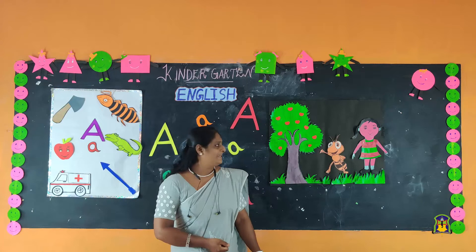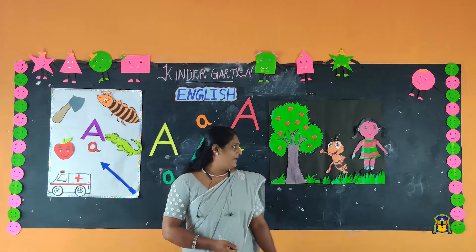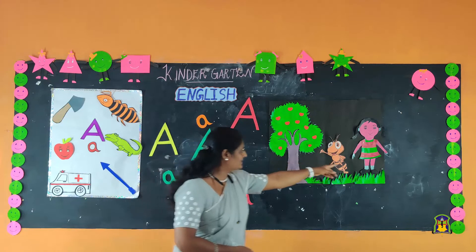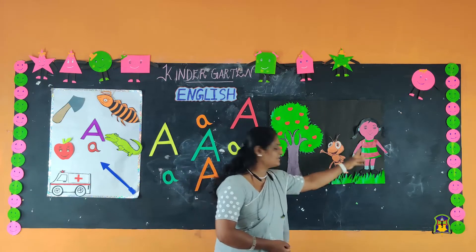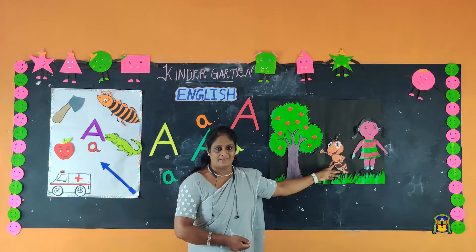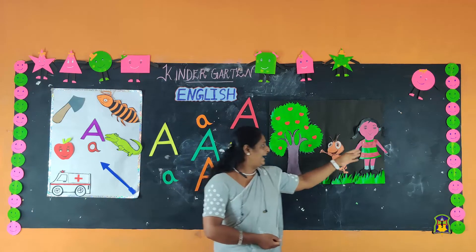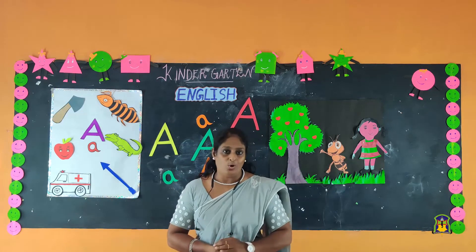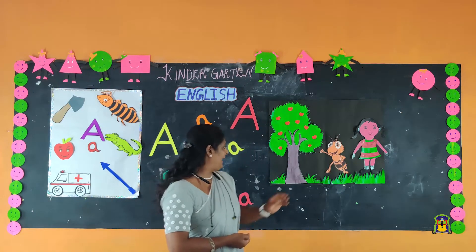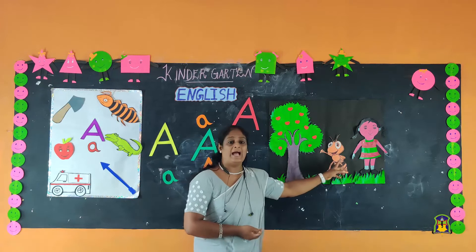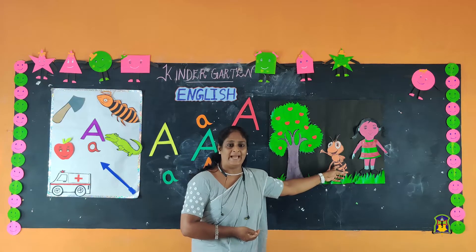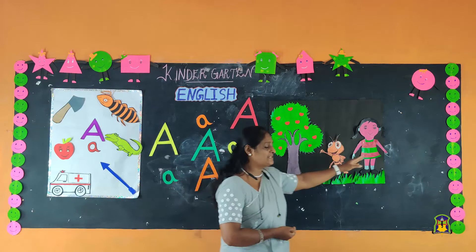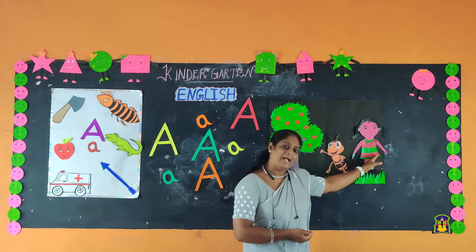Do you like stories? Yes! The name of our story is 'Alice and Annie the Ants.' Alice is a little girl, like you all. Annie is the ant. What is the name of the ant? Annie. And what is the name of this girl? Alice.